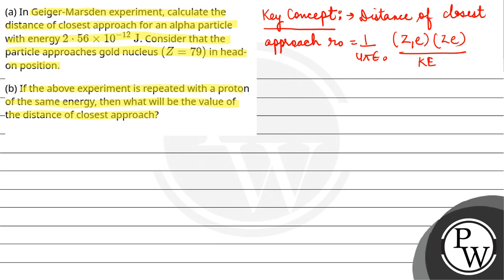Given: Z = 79, for alpha particle Z₁ = 2, and kinetic energy is 2.56 × 10^-12 joules.